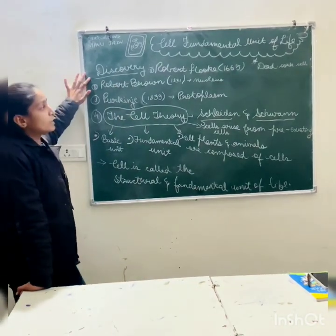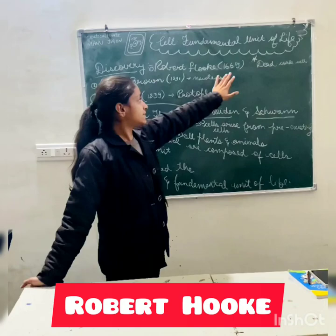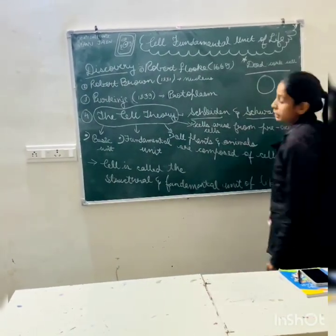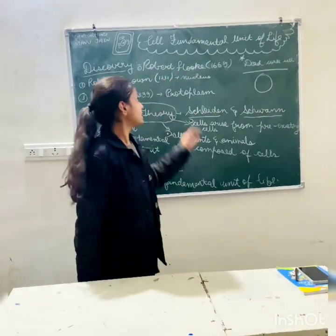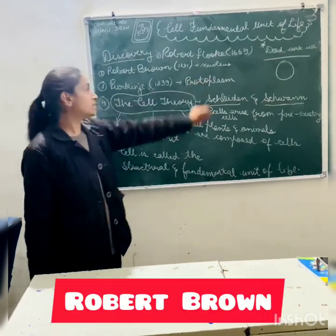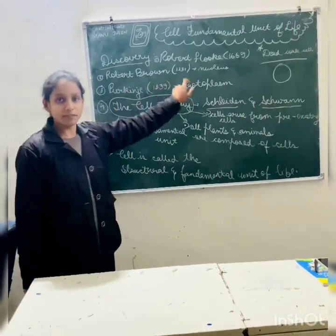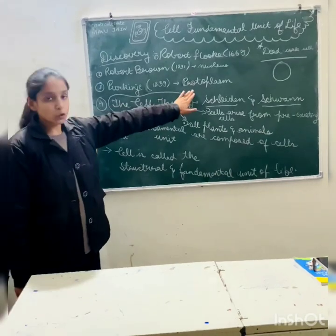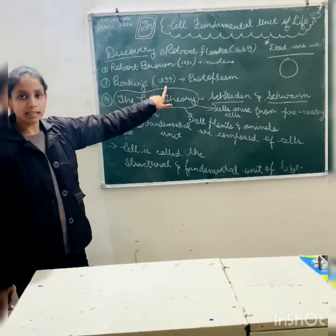The discovery of cell was done by Robert Hooke in 1665. He took an onion and peeled it, and on a slice he discovered the cork cell. The discovery of nucleus was done by Robert Brown in 1831. The term protoplasm was discovered by Purkinje in 1839.